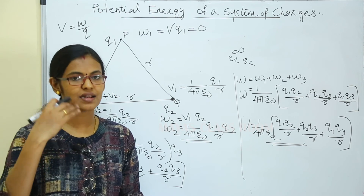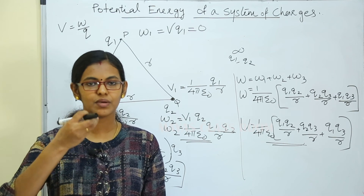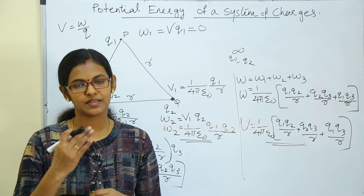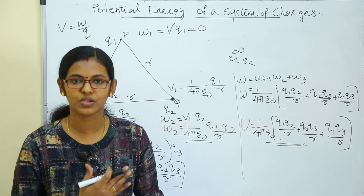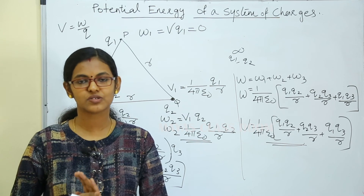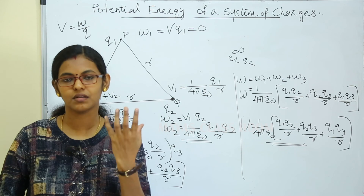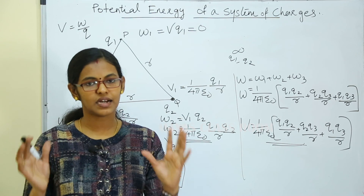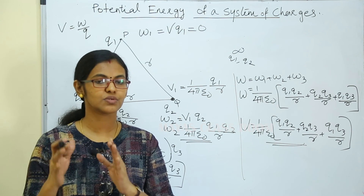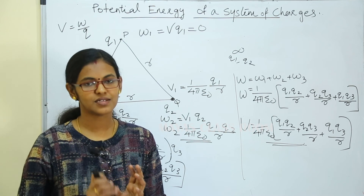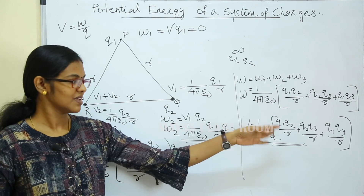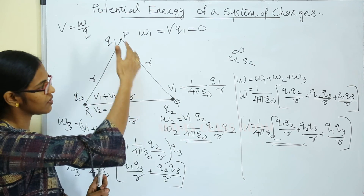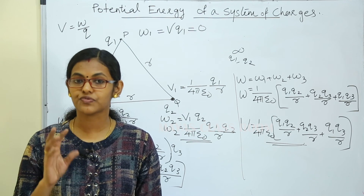The potential energy of a system of charges is the work done to bring the charges from infinity to the present position. For a single charge, the potential energy u is equal to v into q. For two charges, U is 1 by 4 pi epsilon 0 times q1 q2 divided by r. For three charges, we sum all pairs similarly.